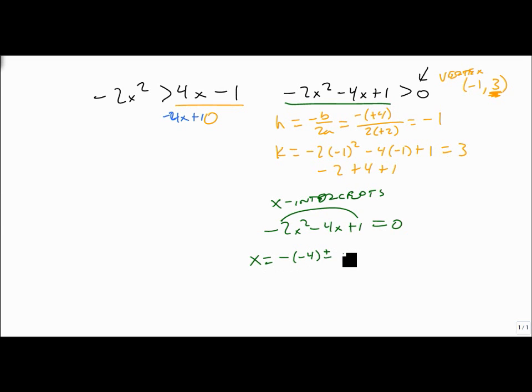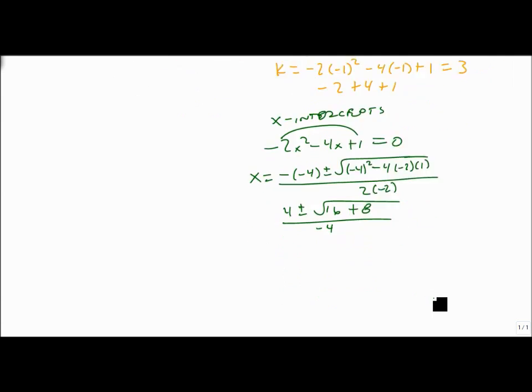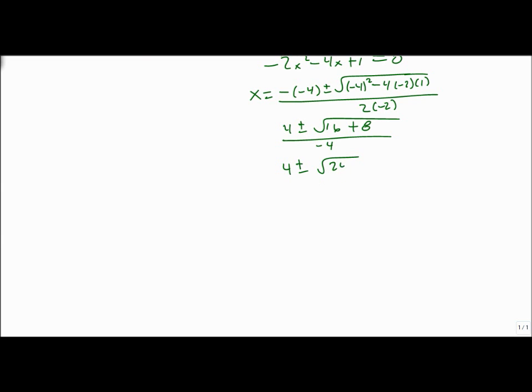x equals minus a minus 4 plus or minus the square root of minus 4 squared, minus 4 times minus 2 times 1 all over 2 times a minus 2. Well, that's 4 plus or minus 16 plus 8 all over minus 4. 16 plus 8 is 24. So we get 4 plus or minus the square root of 24 over minus 4, which is 4 plus or minus 2 root 6 over minus 4, which is minus 2 plus or minus root 6 over 2.